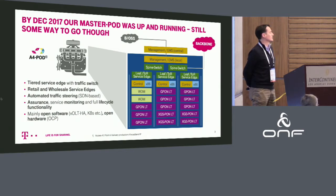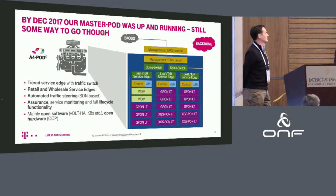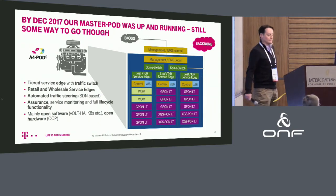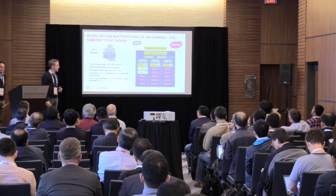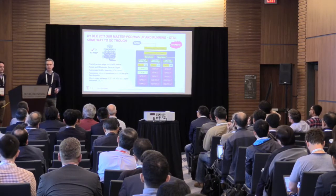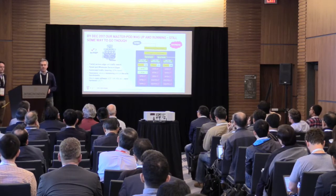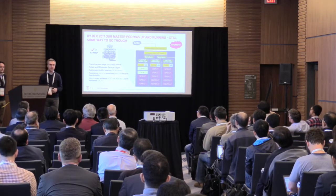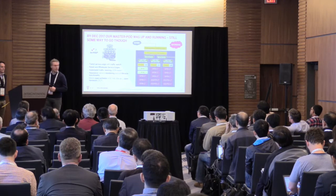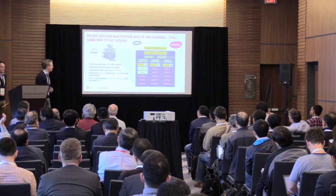We have three servers — not more — to run a Kubernetes ring, and then we have OLTs. These are the Edgecore ones — OLT line cards, so to speak.